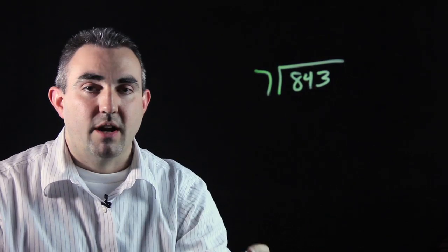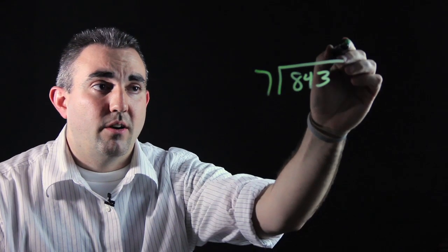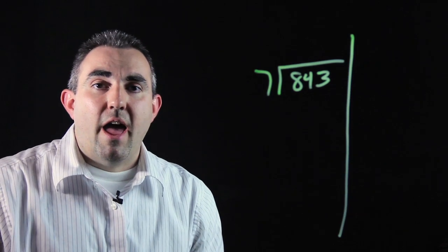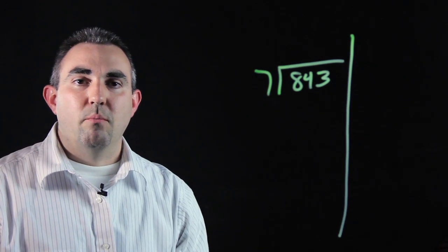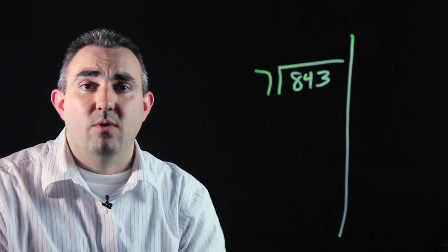So 7 into 843, instead of just starting to divide like we normally would with our normal steps, we're going to draw a line down the side of our problem like this. And we're going to take our divisor, which is 7, and we're going to start to think of multiples of either 10 or 100 that can get into 843.